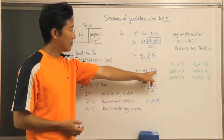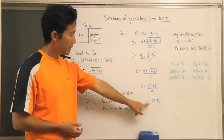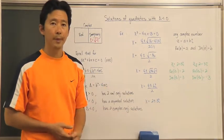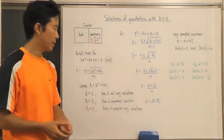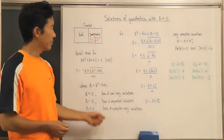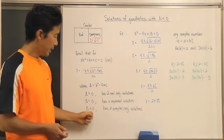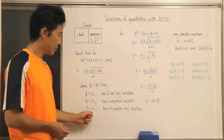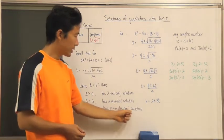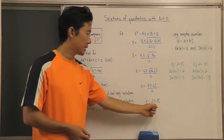We simplify the square root of thirty-six to six, and the square root of negative one becomes i, the imaginary unit. So x equals two plus or minus three i. Notice that this is a complex number — a combination of real and imaginary values. Because the discriminant was less than zero, we get two complex conjugate solutions, which are conjugates of each other.